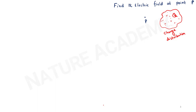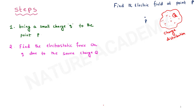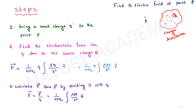For a continuous charge distribution with total charge Q, to find the electric field at point P: bring a small test charge q to point P, then find the electrostatic force on q due to the source. F-bar equals 1 over 4π epsilon-naught times the integral of dq over r-squared times r-cap, where dq can be written as rho dV. Then E-bar equals F-bar over q, giving 1 over 4π epsilon-naught times the integral of rho dV over r-squared times r-cap.